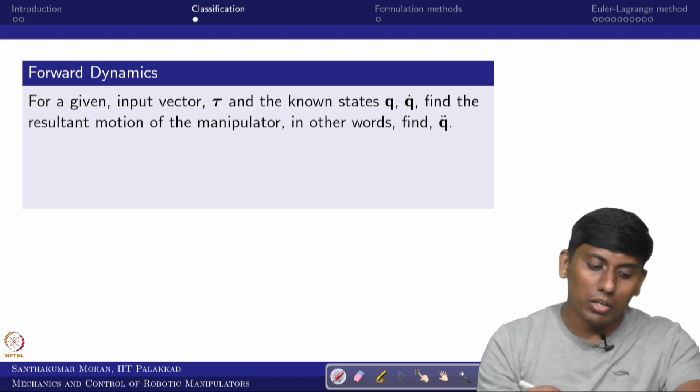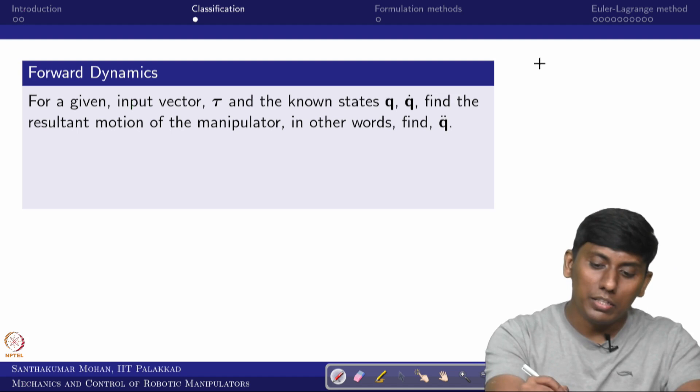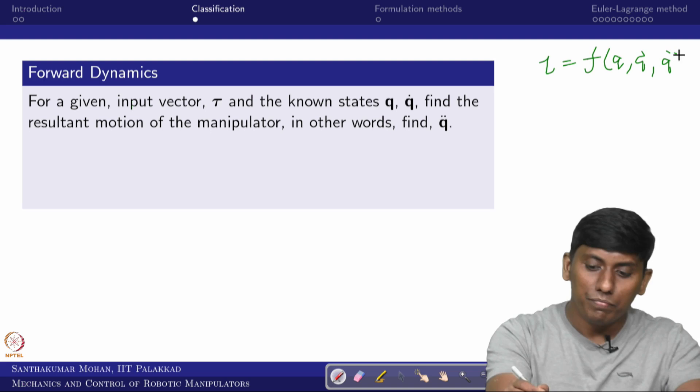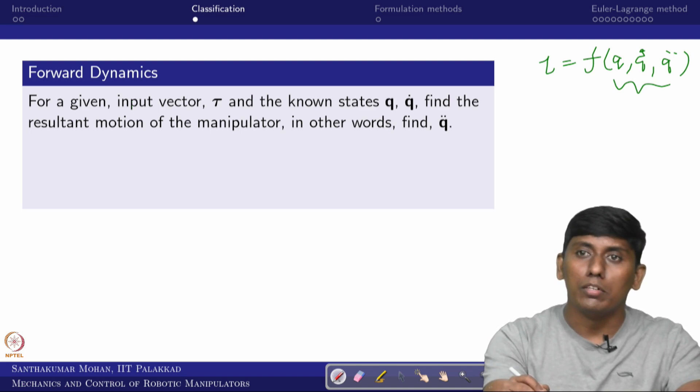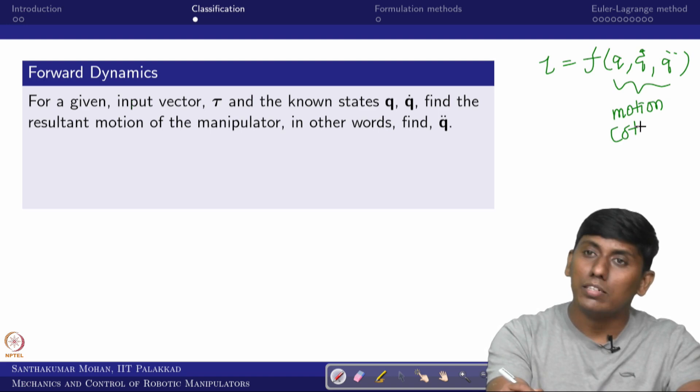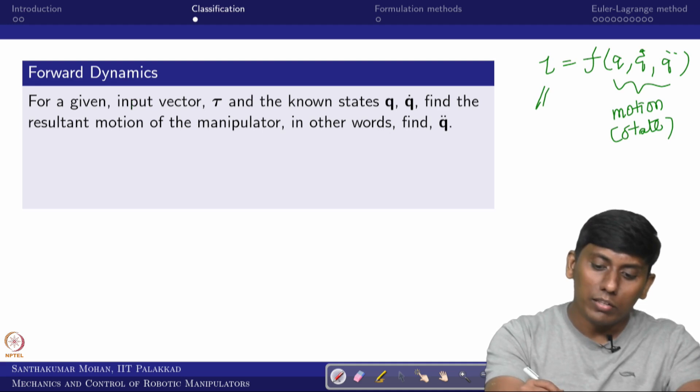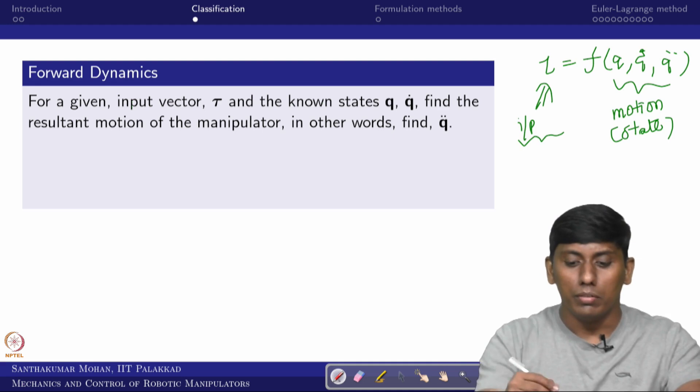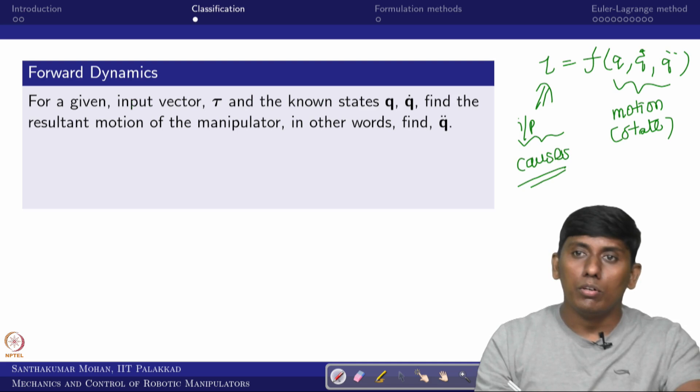Now we will see the subclasses of robot dynamics. We have tau as a function of q, q-dot, and q-double-dot. One space contains the motion variables — the system state variables. The other side contains the input variables — the causes of motion. Can we map these causes to motion? For example, in a serial manipulator connected to a motor, if you provide a torque, how does the system behave?